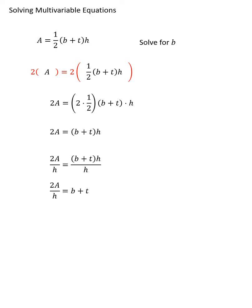And cancel out the h. Now remember my goal here is to solve for b, so now to solve for b I could subtract t from both sides of the equation. That would give me this expression, and now I've solved for b. The answer is 2A divided by h minus t. And that completes this short video on solving multivariable equations.